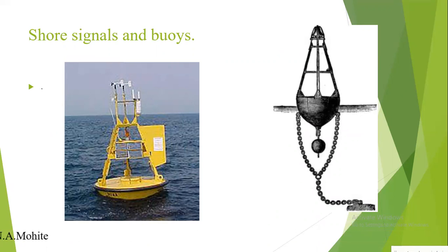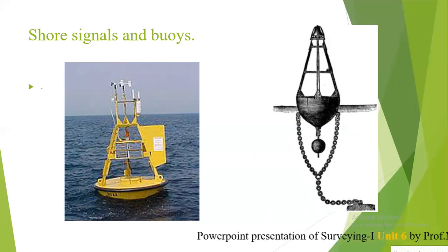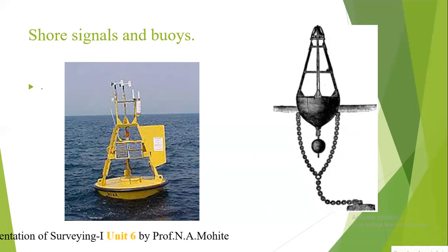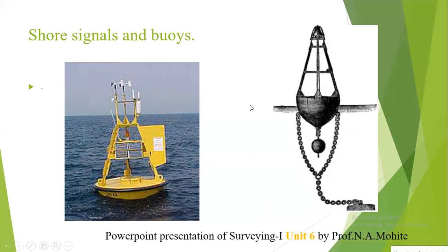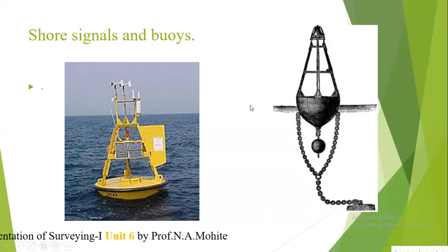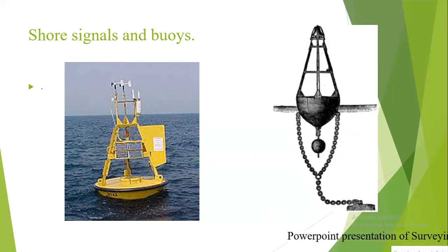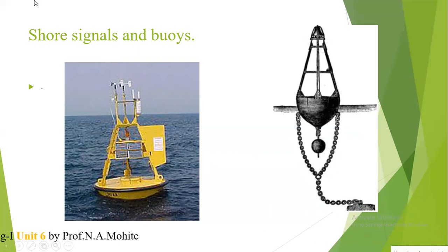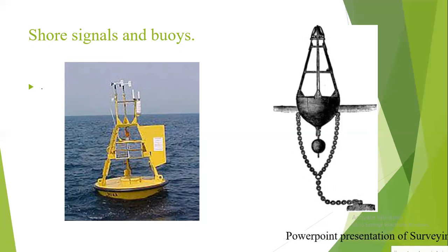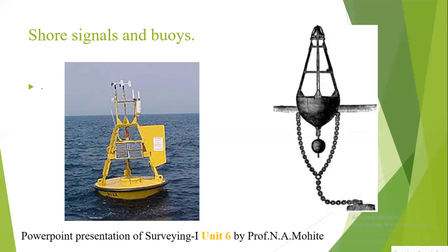The signals are usually wooden tripods with a white and colored flag on the top. A buoy is a float made up of light wood or a hollow airtight vessel, which is properly weighted at the bottom and anchored in a vertical position by means of wires. In deep waters, range lines are marked by a signal at shore and buoys in water.